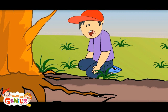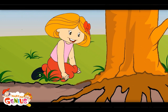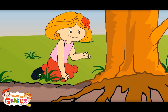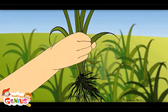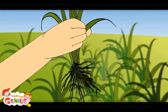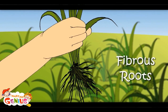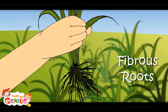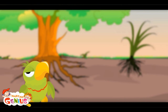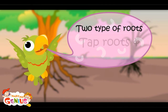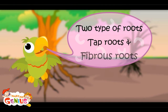Does all plants have tap roots? Mostly big plants have tap roots, as these have to go very deep. The small plants have these fiber type roots. These are called fibrous roots. As the plants are not large in size, the small plants have these fiber type roots. Two types of roots: tap roots and fibrous roots.